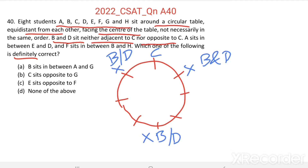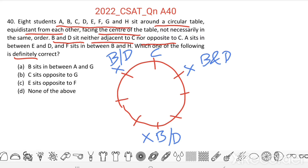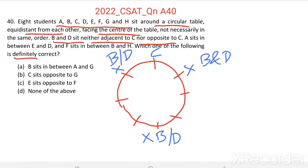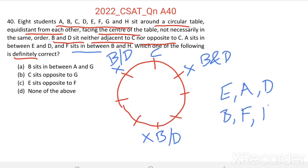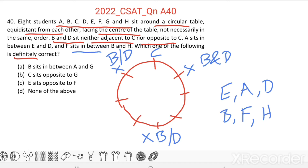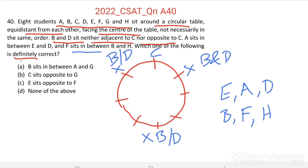Then, A sits in between E and D. F sits in between B and H. Which one of the following is always correct? That is what we have to find.